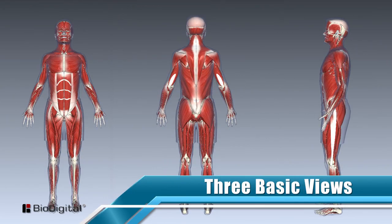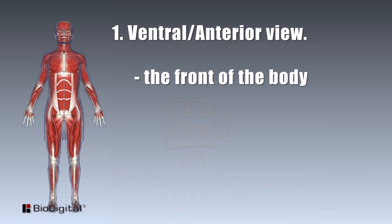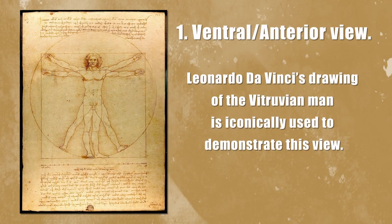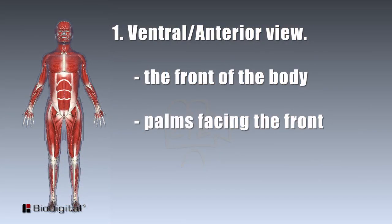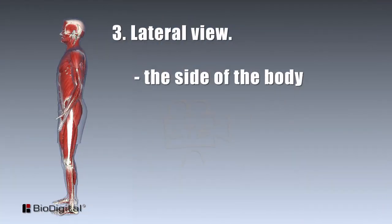The body has three basic views. Number one, the standard view most commonly known is the ventral or anterior view. Da Vinci's drawing of the Vitruvian man is iconically used to demonstrate this view. This view includes the palms of the hands turned and showing to the front, which makes them ventral or anterior. Number two is the dorsal or posterior view, which is the back of the body. And third, the lateral view, which is the side view of the body.